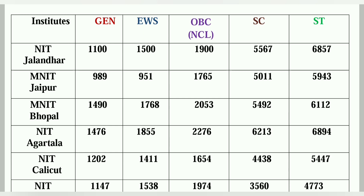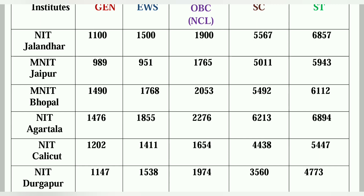MNIT Jaipur: EWS is 951, OBC NCL is 1765, SC is 5011, ST is 5943. MNIT Bhopal: General is 1490, EWS is 1768, OBC NCL is 2053, SC is 5049, ST is 6112. NIT Agartala: General is 1476, EWS is 1855, OBC NCL is 2276, SC is 6213, ST is around 6894.